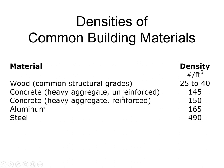Concrete with heavy aggregate, unreinforced, is 145 pounds per cubic foot. When we reinforce it with steel, the steel has a much higher density but there's much less volume of steel, so the overall average density of reinforced concrete is about 150 pounds per cubic foot. The difference between 145 and 150 reflects the higher density in the portions occupied by steel. Aluminum has a density of 165 pounds per cubic foot, and steel is the densest common material at 490 pounds per cubic foot.